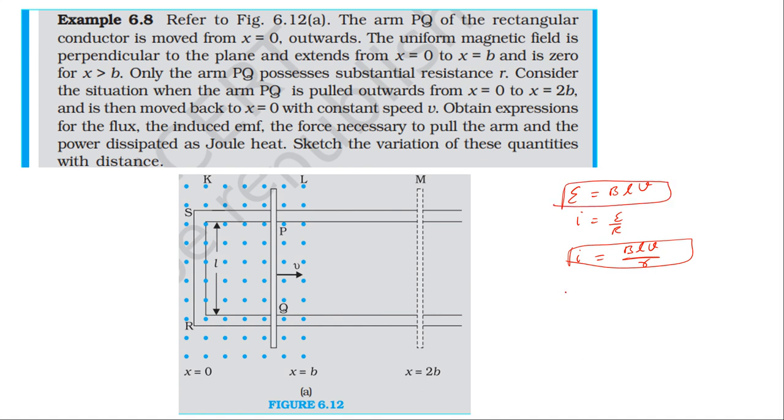Power is the EMF times current. So power equals BLv times i, which equals BLv times BLv divided by r. Therefore power equals B squared L squared v squared divided by r.